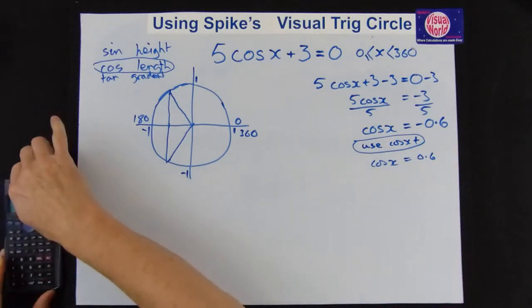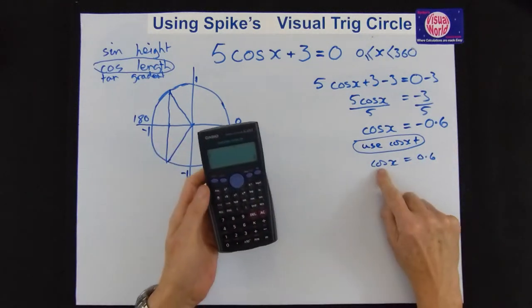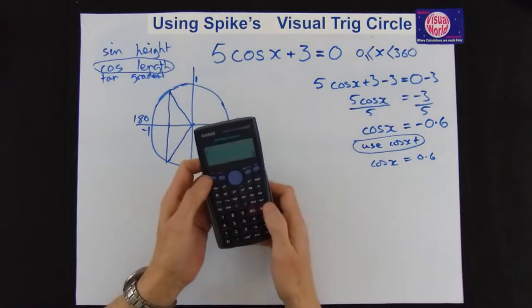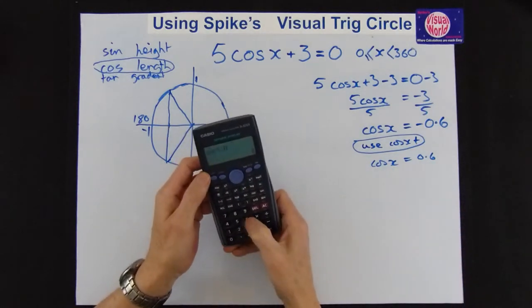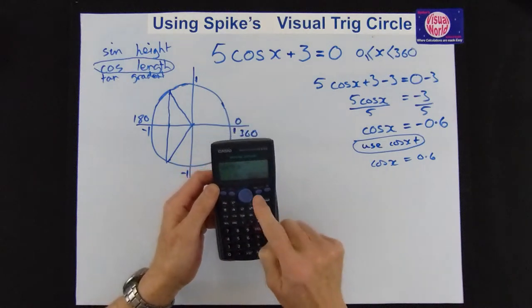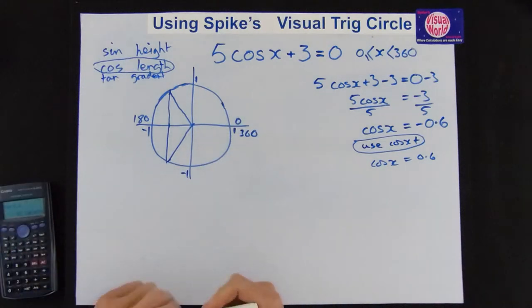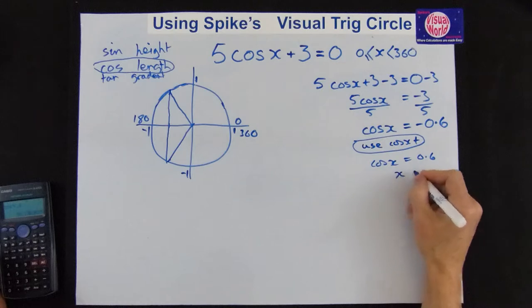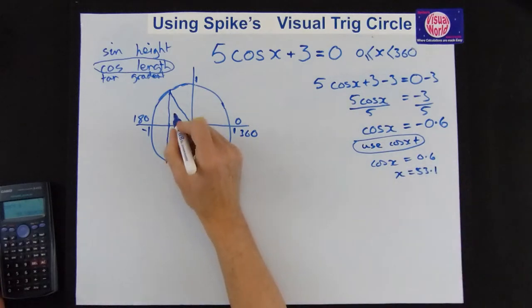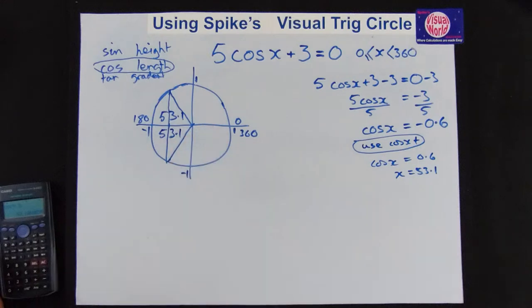So we now take the calculator. And we've got to get rid of cos. So it's inverse cos. So you go shift cos 0.6 equals. And we get 53.1. So x equals 53.1. So that's not one of our answers because that's the angle in there. So 53.1 there. And 53.1 there.